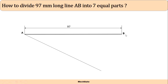To divide line AB into seven equal parts, we draw another auxiliary line AB dash at an angle less than 30 degrees. We have to select the length of AB dash in such a way that it can be divided into seven equal parts and its length is more than 97. A suitable value more than 97 that is divisible by 7 is 98.